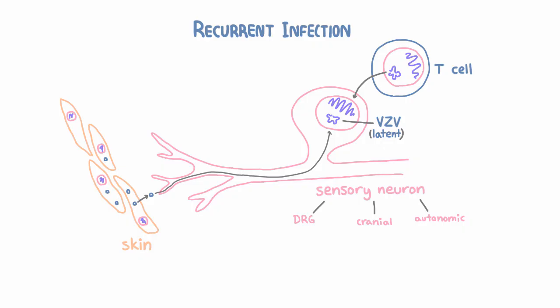Now if VZV reactivates in the sensory neurons, it can cause shingles. And the way this works is the same as with HSV. New VZV particles are produced that are transported anterograde to the skin. And there they infect epithelial cells. And just like with primary infection, the virus gets released extracellularly and can aerosolize and infect new hosts.